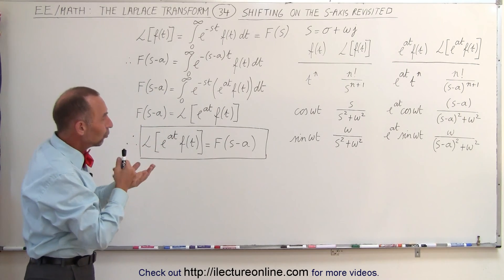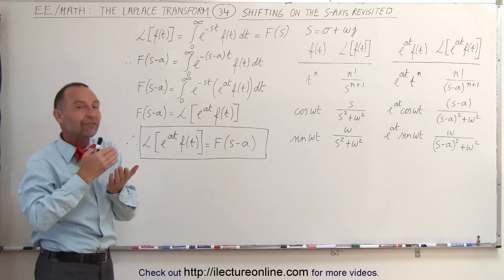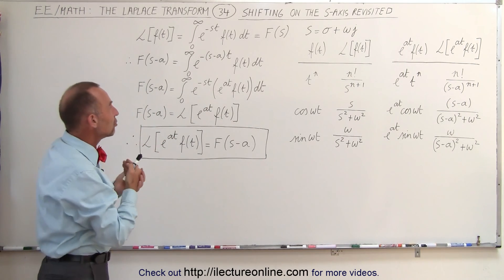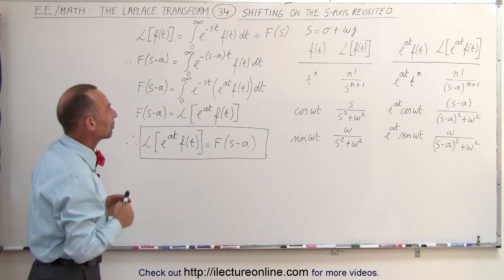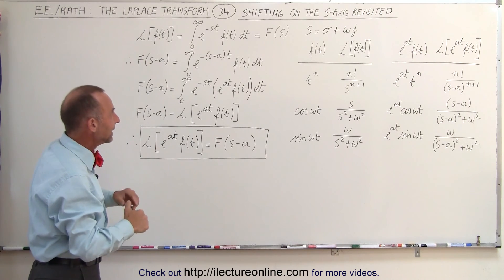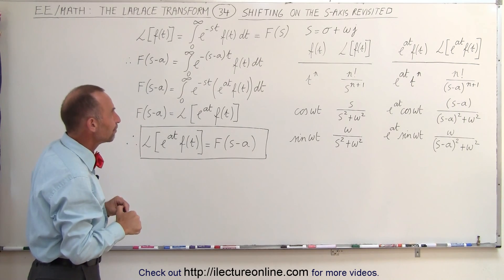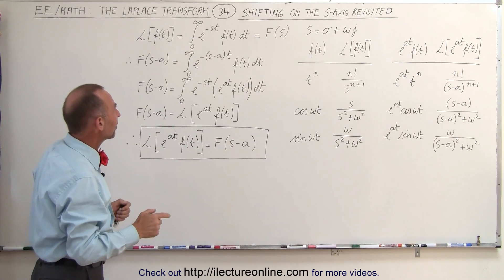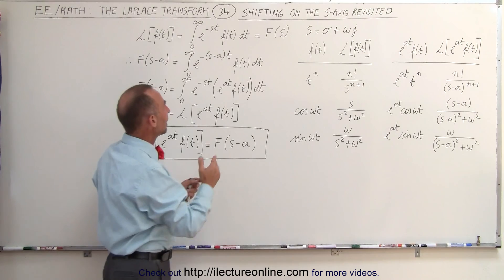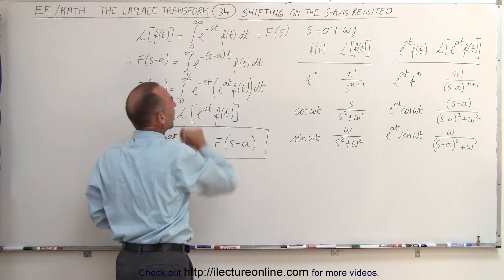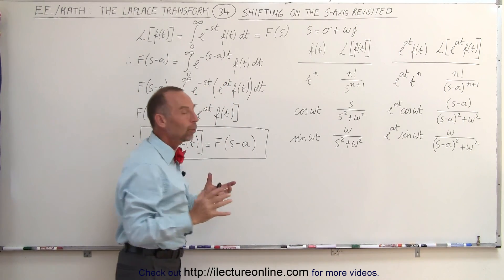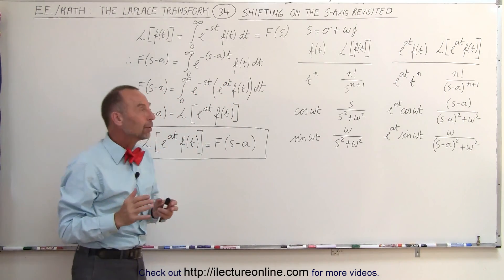Now, what happens when there's a shift in the transfer domain — in the complex domain, or in the S domain? For example, what if something is written as S minus A? What can we do with that?